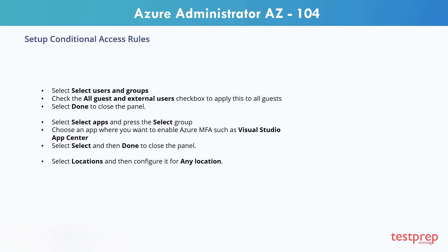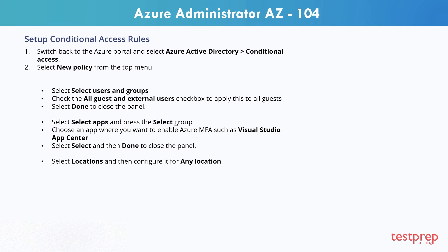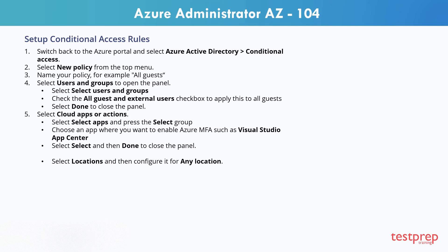Step 5, set up conditional access rules for MFA. To set up a conditional access policy that enforces MFA for guest users accessing specific apps on your network: step 1, switch back to the Azure portal and select Azure Active Directory, then conditional access. Step 2, select new policy from the top menu. Step 3, name your policy, for example 'all guests.' Step 4, select users and groups to open the panel, select 'select users and groups,' and check the 'all guests and external users' checkbox. Select done to close the panel. Step 5, select cloud apps or actions, select the target app — such as Visual Studio App Center — where you want to enable Azure MFA, then select done to close the panel.